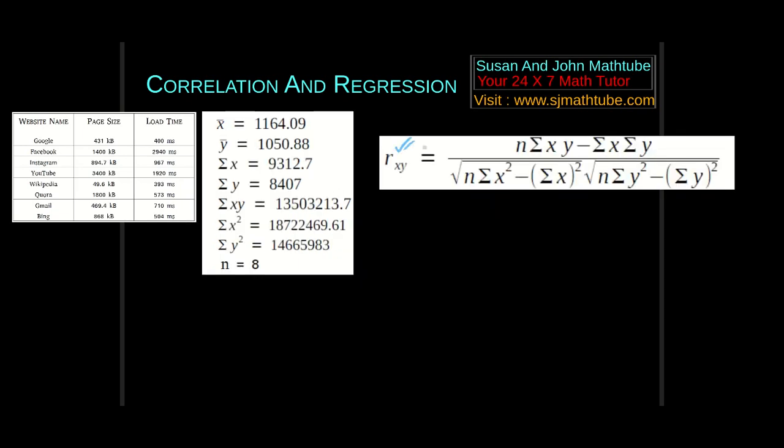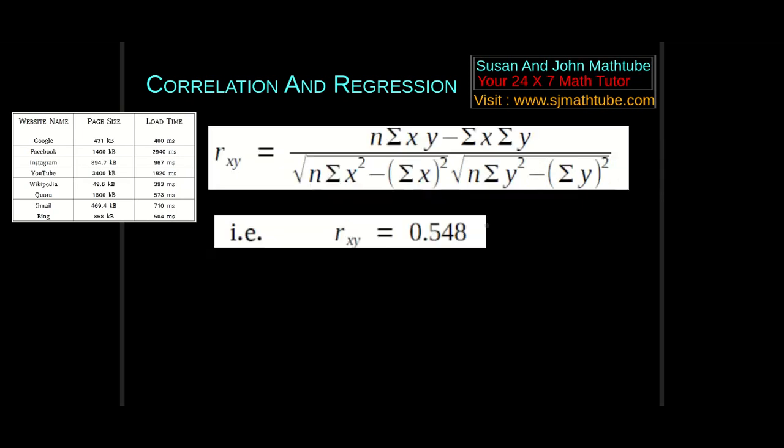Correlation is given by n sigma xy minus sigma x sigma y, the whole divided by this. Plug in all these values. I calculated it and got 0.548. I told you you will always get an answer between minus 1 and 1.